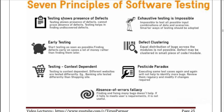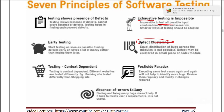We will support this answer using the 7 principles of software testing. The first principle is exhaustive testing — testing all combinations of all features is not possible, as it is too time consuming. It is impossible to test all possible input combinations. The second is defect clustering — if there are multiple modules in the software, we solve defects module-wise. The third is pesticide paradox — if we use the same type of testing or data, it will not help identify new bugs; on each testing we should apply new ways to test.